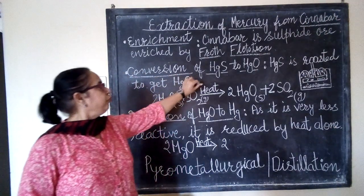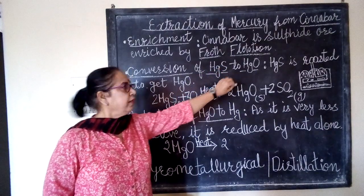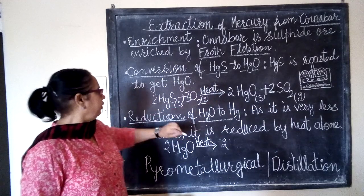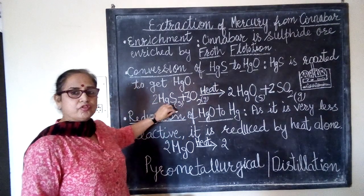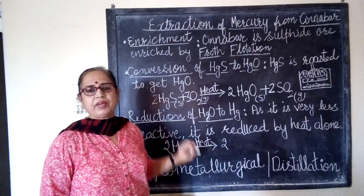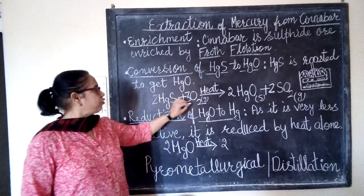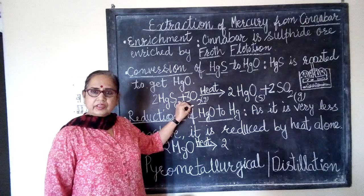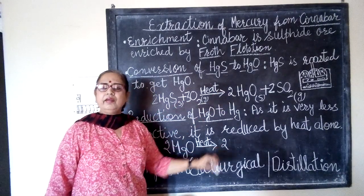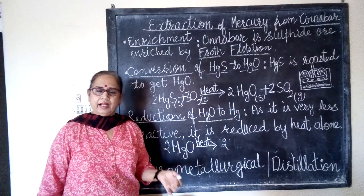Conversion of mercury sulphide to oxide is done by roasting, because it is a sulphide ore. Sulphide ore is roasted — that is, heated strongly in the presence of excess of air. On doing so, a redox reaction takes place, mercury oxide is obtained, and there is an evolution of sulphur dioxide gas.